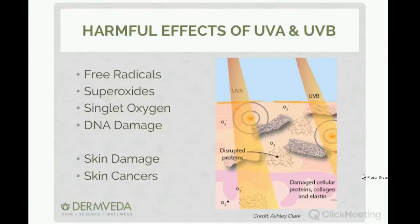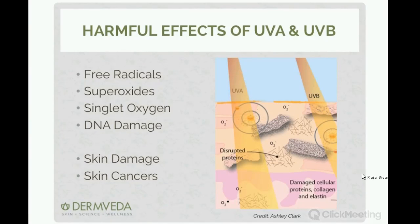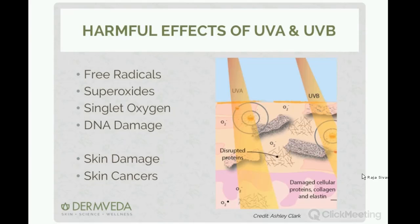When UVA and UVB get into your skin they lead to harmful effects. Both forms are high energy, which means you start to create highly reactive chemicals known as free radicals — examples include superoxides and singlet oxygen. These can lead to DNA damage. These reactive molecules can attack surrounding proteins, disrupting them and damaging important structures like collagen and elastin. That's what eventually leads to skin damage and skin cancers, and that's what we're trying to avoid.